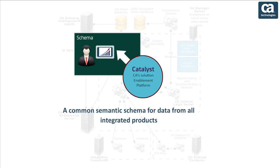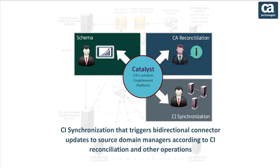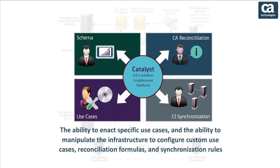CA Catalyst is fully embedded in the SA Manager installation. CA Catalyst provides several functionalities such as: a common semantic schema for data from all integrated products, CI reconciliation to ensure that resources managed in multiple products have a unified set of property values, CI synchronization that triggers bi-directional connector updates to source domain managers according to CI reconciliation and other operations, the ability to enact specific use cases, and the ability to manipulate the infrastructure to configure custom use cases, reconciliation formulas, and synchronization rules.